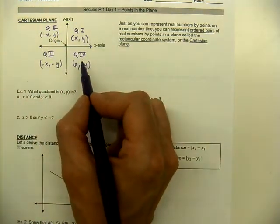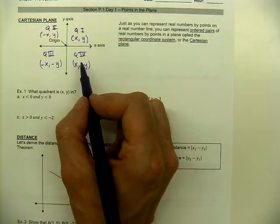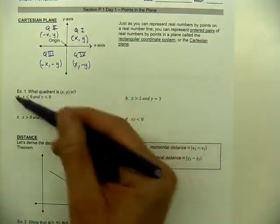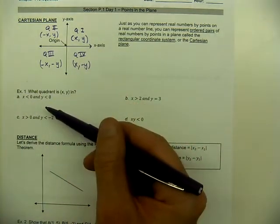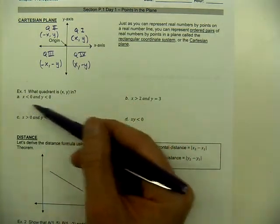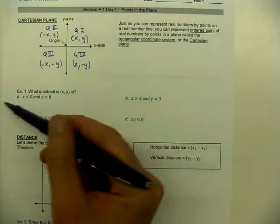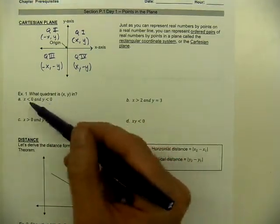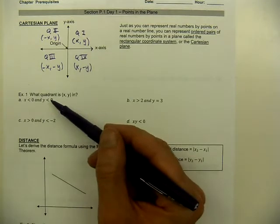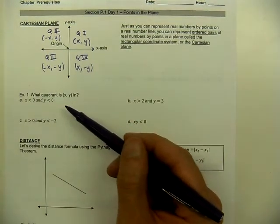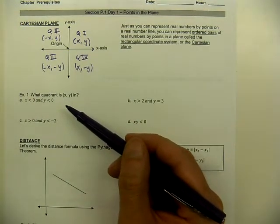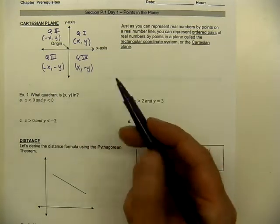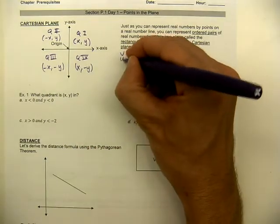We label those quadrants in a counterclockwise direction using Roman numerals. In a bit, we're going to talk about where you find a point with certain qualities — notice they're not just giving you an ordered pair, but clues with inequality symbols. So first we need to remember the difference between a horizontal and a vertical line and the equation each is written in.